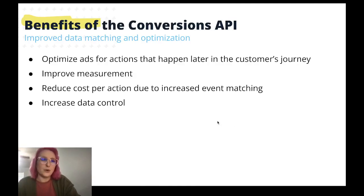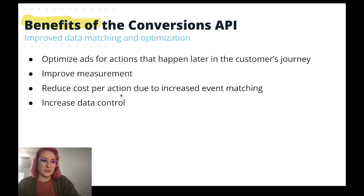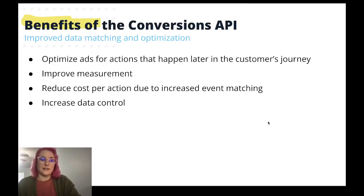The benefits of the Conversions API include improving your data matching and then improving your optimization by proxy. You'll be able to better improve your measurement, which can allow you to optimize ads for actions that happen later in the customer's journey. This in turn reduces the cost per action due to increased event matching — something we saw with some of our e-commerce clients who were seeing a really high cost per action and not seeing a lot of attributed purchases or lead events from Facebook because of the data loss from iOS 14. It also helps increase your data control.